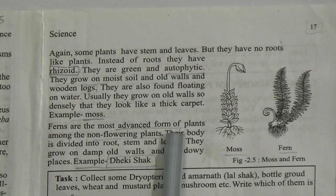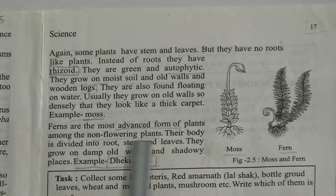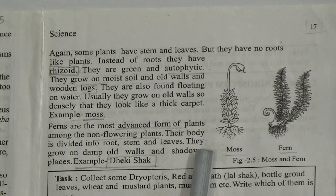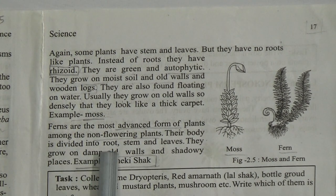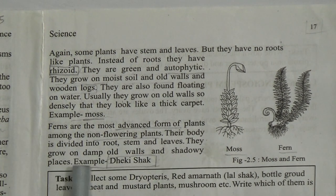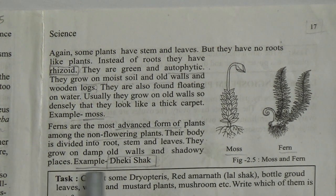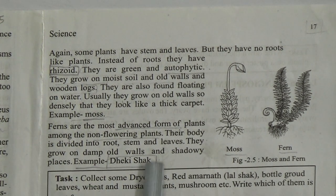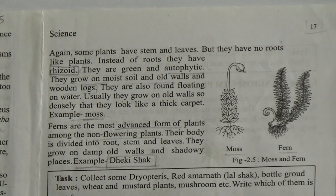Ferns are the most advanced form of plants among the non-flowering plants. Their body is divided into roots, stem, and leaves. They grow on damp old walls and shadowy places. Example: Dryopteris fern. Here is the picture of fern.